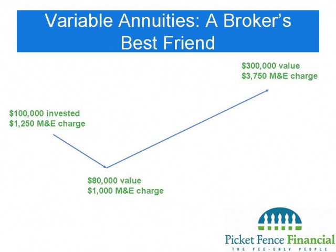Let me isolate the mortality and expense charge to show you why it's really egregious. Say you put $100,000 into an annuity. The first year, the M&E fee at 1.25% is $1,250. Now let's say at the end of the next year your annuity had dropped to $80,000, and you unfortunately died. That $1,250 ensures your heirs receive $100,000 rather than the $80,000 the annuity is worth — so it seems like a great deal.